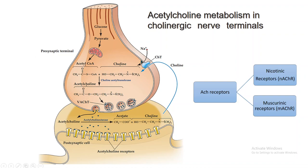Upon arrival of an appropriate nerve impulse, acetylcholine-containing vesicles fuse with the membrane and release acetylcholine into the synaptic cleft. Immediately after release, some acetylcholine binds to receptors on the post-synaptic membrane, while the remaining acetylcholine in the synaptic cleft is broken down by acetylcholinesterase into acetate and choline. This choline may then be taken up again by the synaptic cell through an acetylcholine transporter along with a sodium ion, which provides the energy.